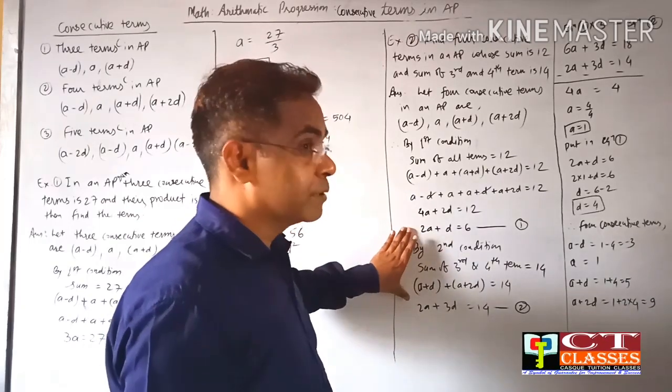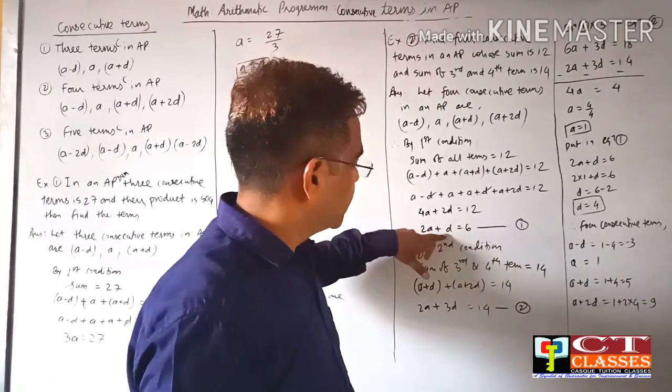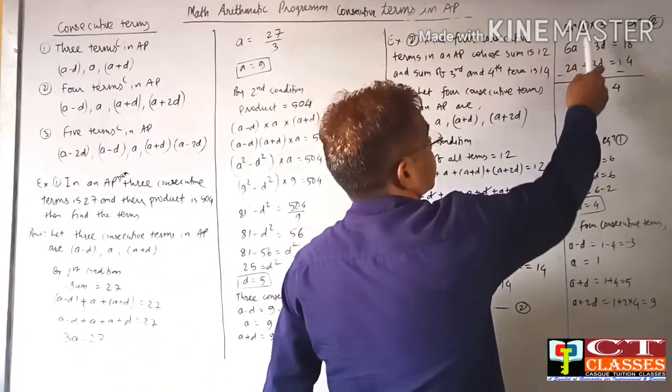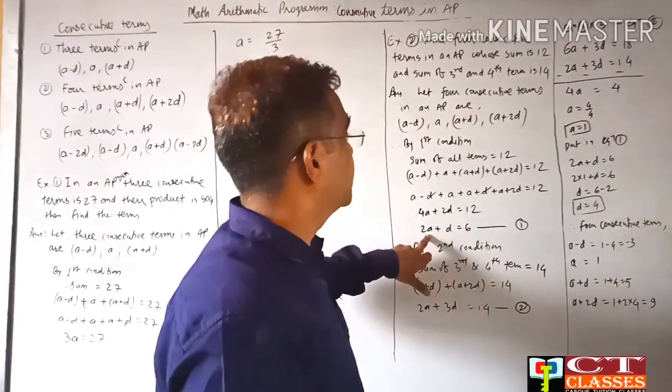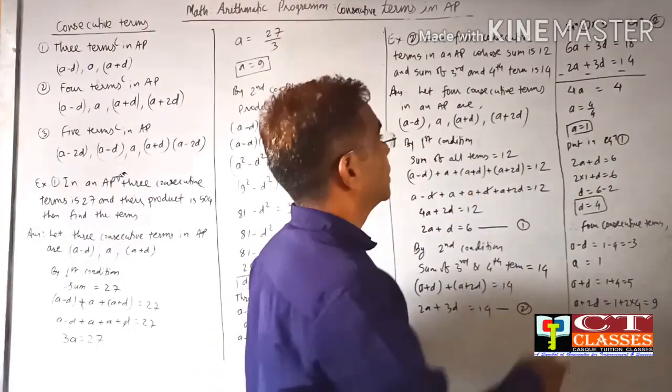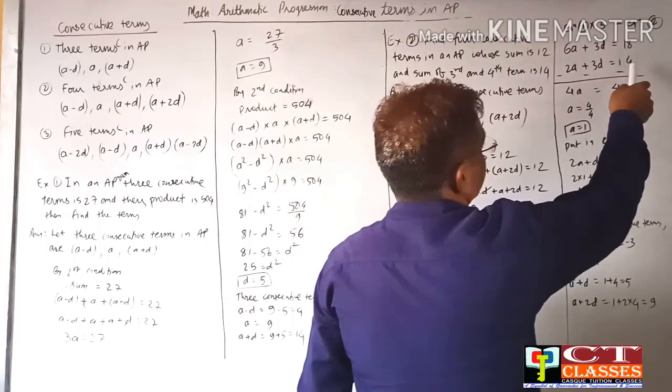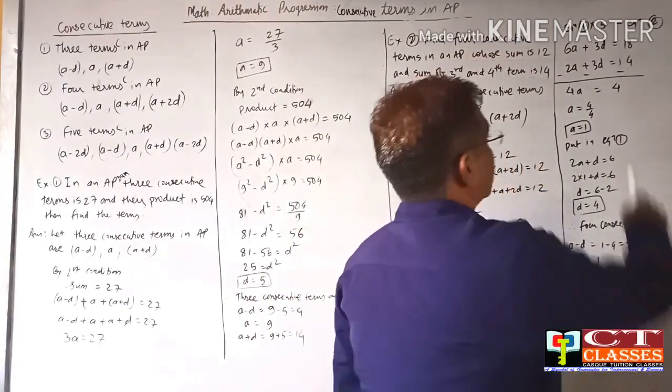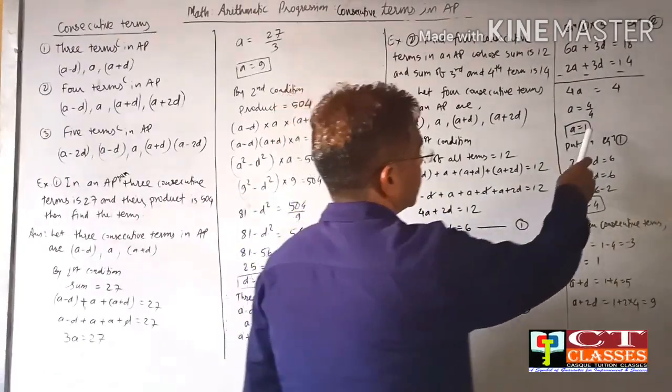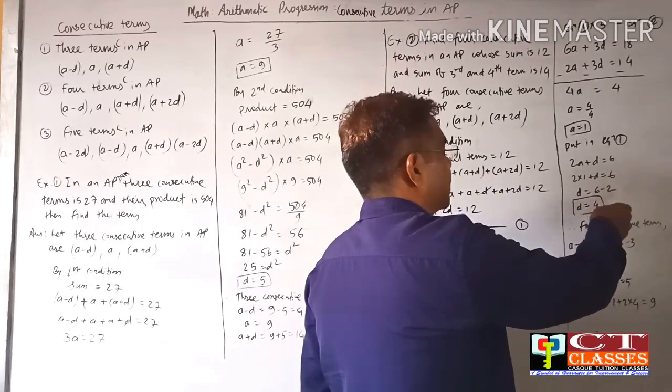To solve, multiply equation 1 by 3 to match coefficients of d. So 6a + 3d = 18. Now subtract equation 2 from this: 6a + 3d - (2a + 3d) = 18 - 14. The 3d terms cancel. 4a = 4, so a = 1.